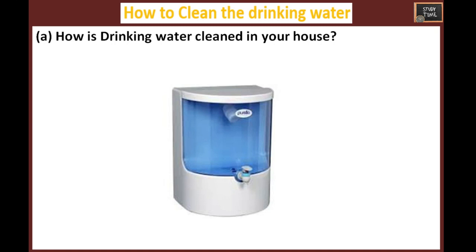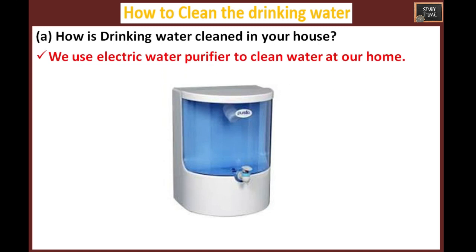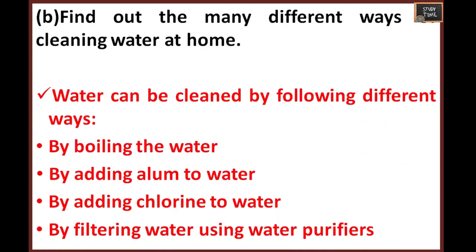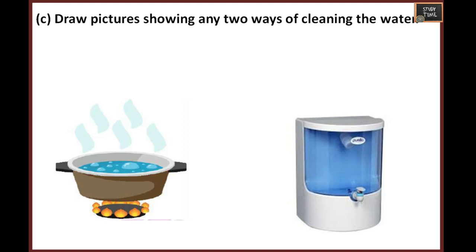Next we are going to see how to clean drinking water. We clean drinking water in many ways. We use an electric water purifier to clean drinking water at home. Find out other different ways of cleaning water at home: you can boil the water, you can add alum — alum is a chemical compound which we add to water — and we can also add chlorine. By filtering water using water purifiers, these are the different ways to clean water. Draw pictures showing any two ways of cleaning water. The first picture shows boiling the water, and the second shows using a water purifier.